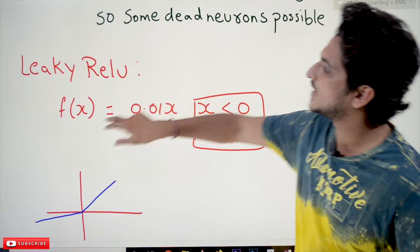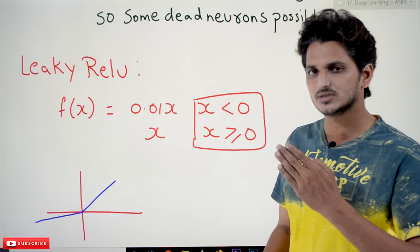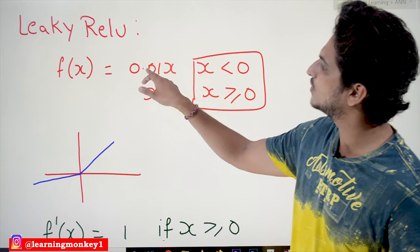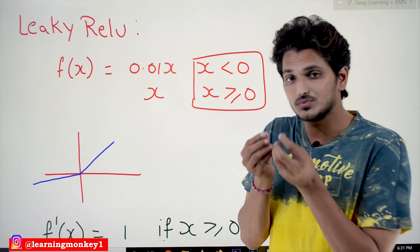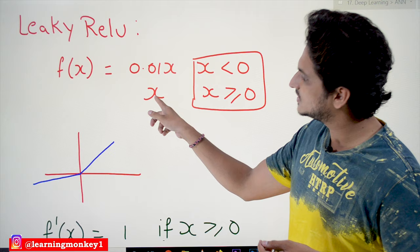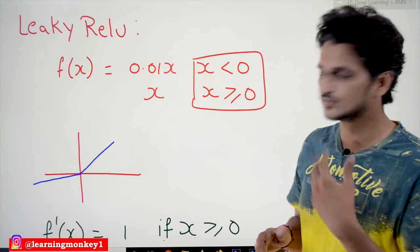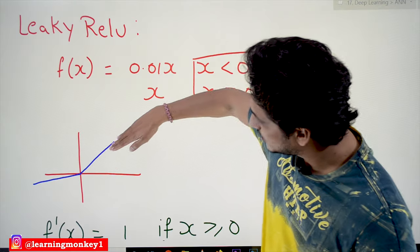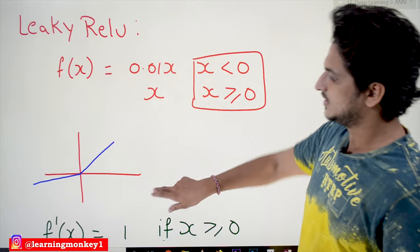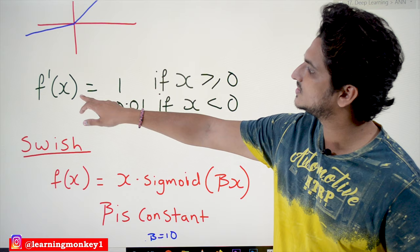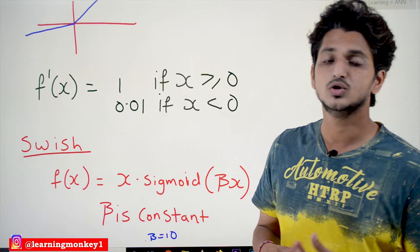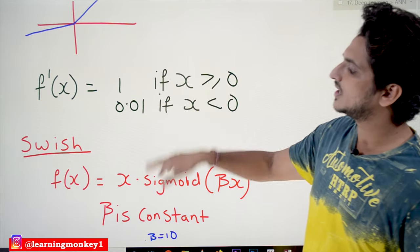In order to overcome this dead neuron problem, we use Leaky ReLU. Leaky ReLU is just a slight modification of the ReLU activation function. What they consider here is f(x) = 0.01x if x is less than 0 — meaning we consider a small percentage value of x for negative inputs. Otherwise, we take x as it is for x greater than or equal to 0. The derivative of this function is f'(x) = 1 if x is positive, and 0.01 if x is less than 0. To avoid the problem of dead neurons, Leaky ReLU is used.